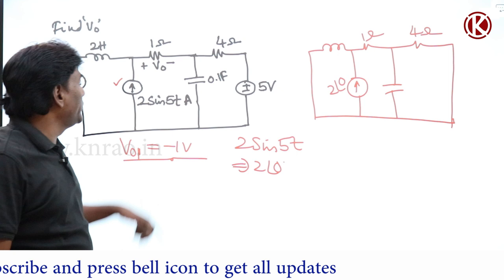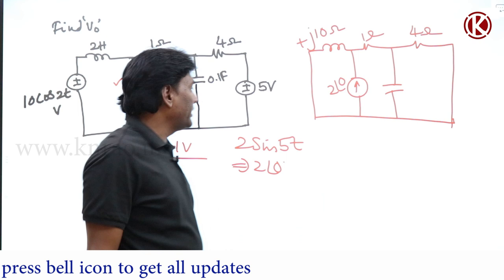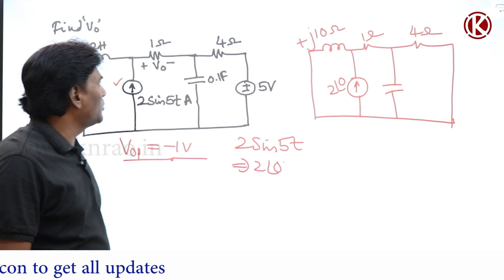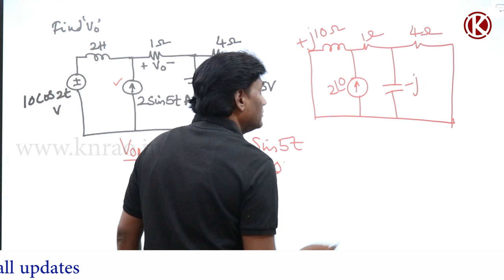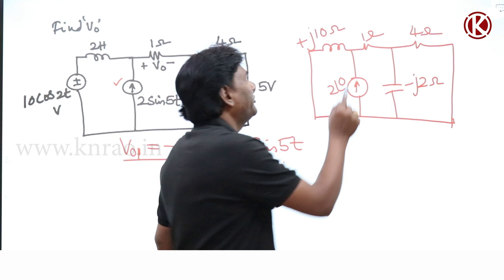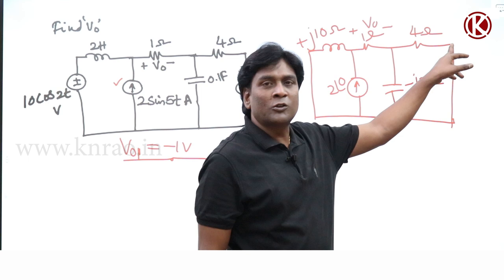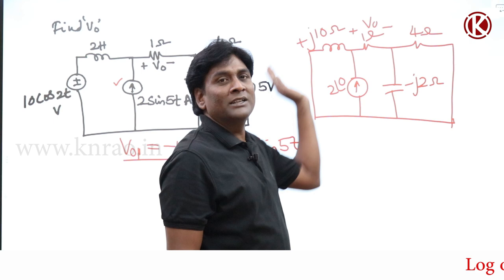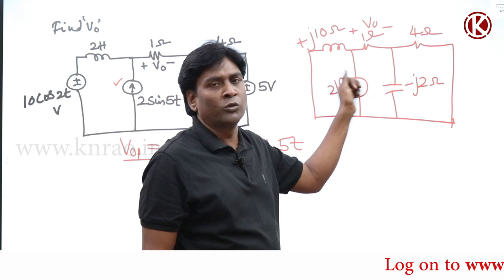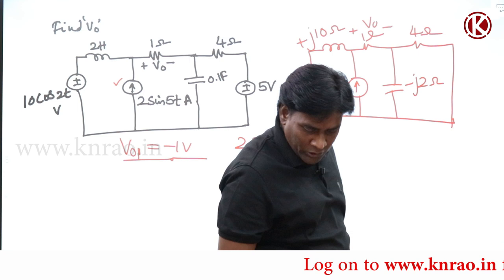ω = 5, so jωL = j×2×5 = j10 ohms. For the capacitor, ω = 5, so 1/ωC = 1/(5×0.1) = 0.5, giving −j0.5 ohms, and there's 2 ohms resistance. To solve for v_naught, these elements are in parallel connected in series. Total current times impedance divided by total impedance gives the voltage. Current through 1 ohm directly gives the voltage.